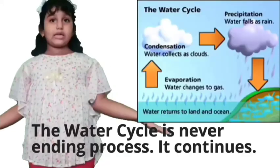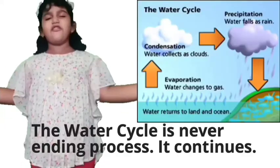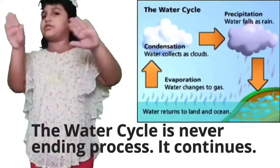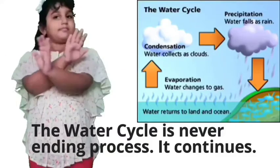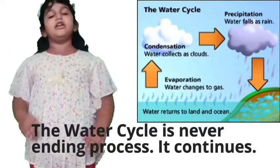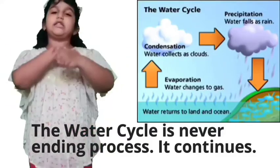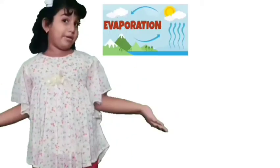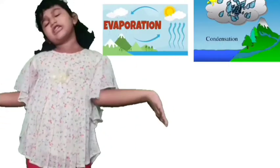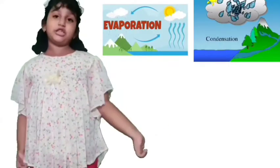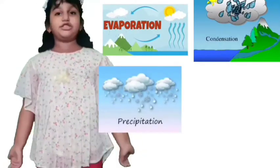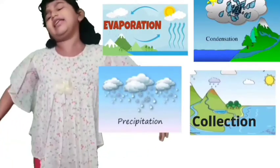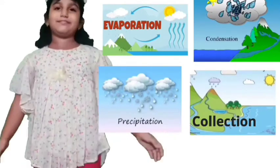The water cycle is a never ending process. It continues: evaporation, condensation, precipitation and collection.